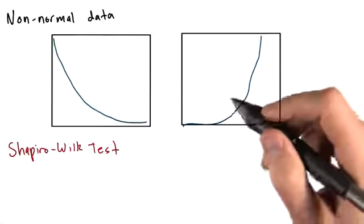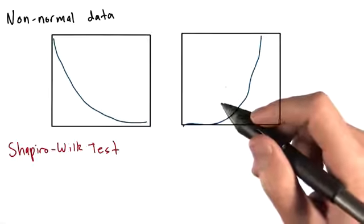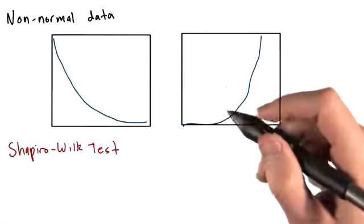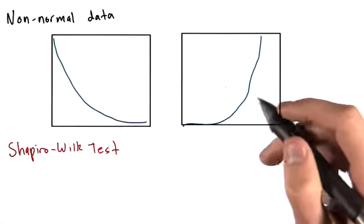But we can do a little bit better than that. There are some statistical tests that we can use to measure the likelihood that a sample is drawn from a normally distributed population. One such test is the Shapiro-Wilk test.